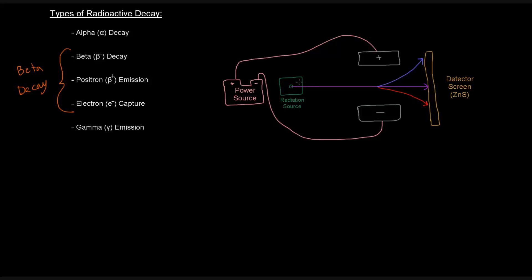If a radiation source launches a beam at a detector screen with positively and negatively charged metal electrodes on either side, the beta minus particle — being negatively charged — tends toward the positively charged plate. The alpha particle — being positively charged with two protons and two neutrons, giving a +2 charge — tends toward the negatively charged plate. Gamma radiation, having no charge, goes straight through unaffected.